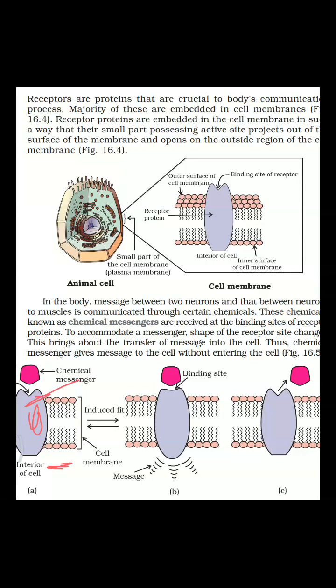In order to accommodate the messenger, the receptor may undergo a change in shape — as you can see in this diagram, there is a change in shape. The messengers are held at the active sites, also called the binding sites. Once the message is transferred, the messengers leave the surface, as shown here.